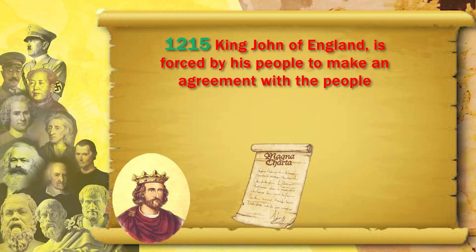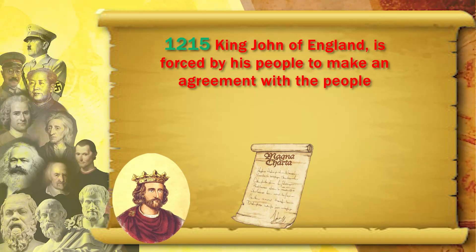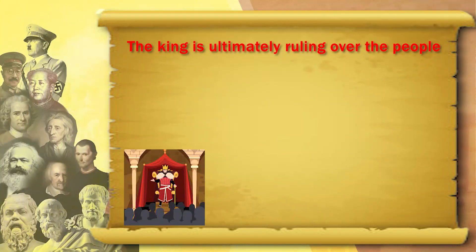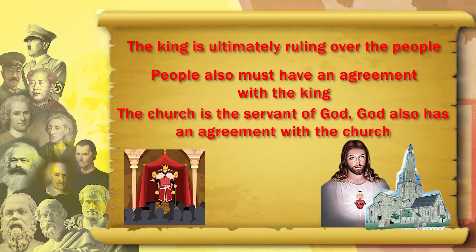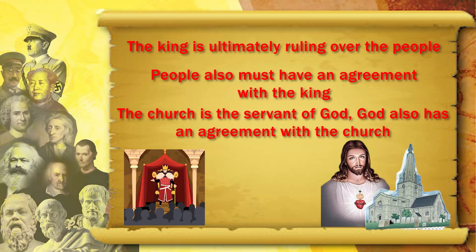In 1215, King John of England was forced by his people to make an agreement with the people. The people said: you have an agreement with the church — this is the concept of covenant. God's power comes to the church, the church's power comes to the king. But the king cannot rule just like that — the king is ultimately ruling over the people, so the people must also have an agreement with the king.